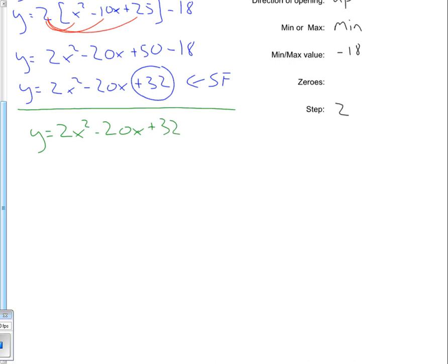You'll notice here that the a value is something other than 1. It's in fact positive 2. So I have to divide every single piece here by 2. And so that 2 is going to carry down. So I'm going to end up with y is equal to 2 times x squared minus 10x plus 16.